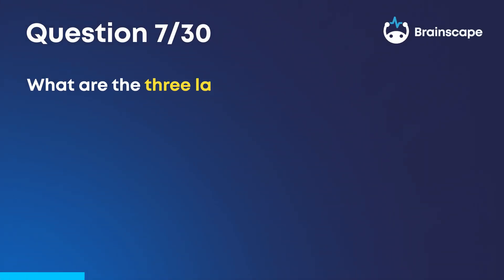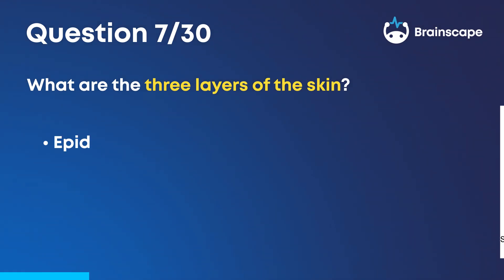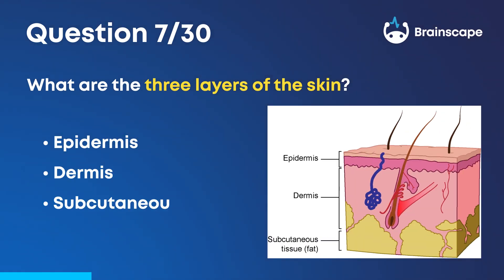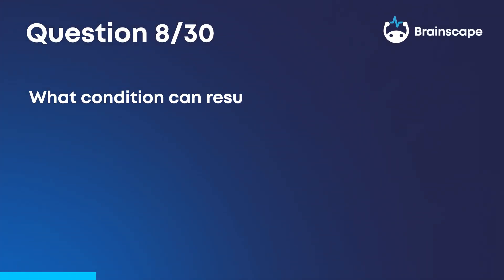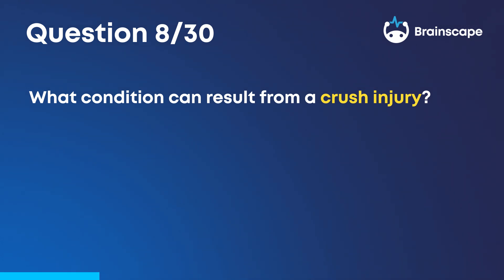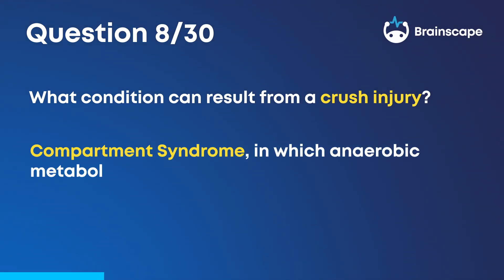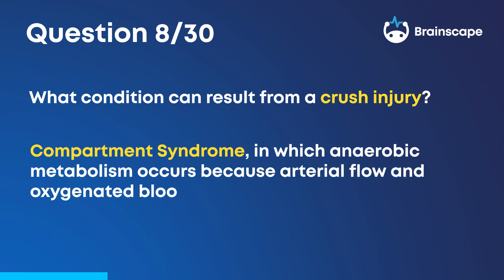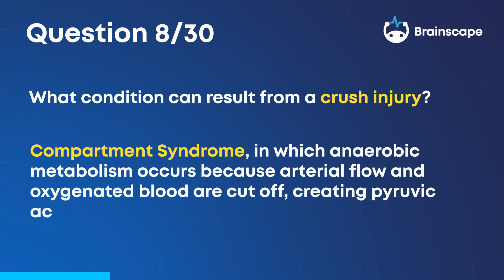Question 7. What are the three layers of the skin? Epidermis, dermis, and subcutaneous. Question 8. What condition can result from a crush injury? Compartment syndrome, in which anaerobic metabolism occurs because arterial flow and oxygenated blood are cut off, creating pyruvic acid.